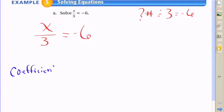So the opposite operation, or the inverse operation of division here, would be multiplication. So you would want to multiply both sides by 3.